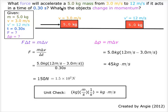What force will accelerate a 5 kg mass from 3.0 m per second to 12 m per second if it acts in a time of 0.30 second? What is the object's change in momentum?